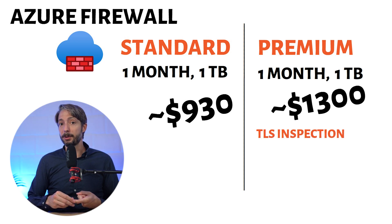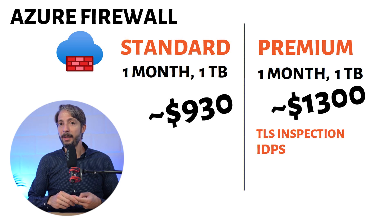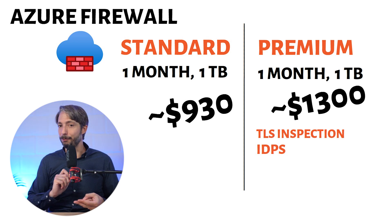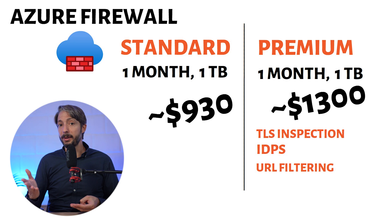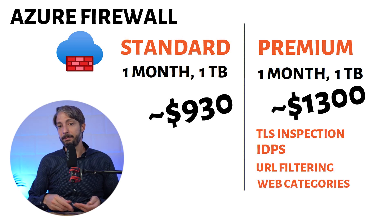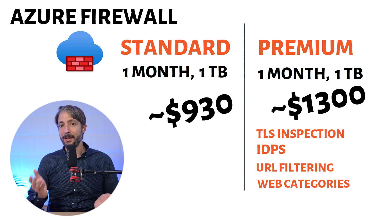With the premium version you get TLS inspection — it decrypts outbound traffic, processes the data, then encrypts it and sends it on to the destination. You also get IDPS, an intelligent way of monitoring, reporting, and blocking network activities. URL filtering lets you decide which URLs should be accessible from the firewall. Web categories allow you to quickly allow or deny access to certain categories of websites — for example, you can block all access to gambling sites.